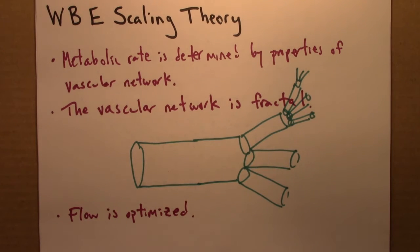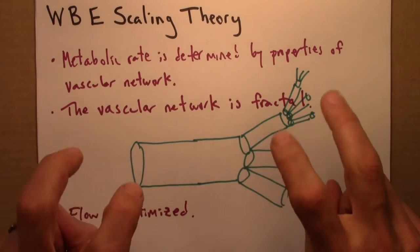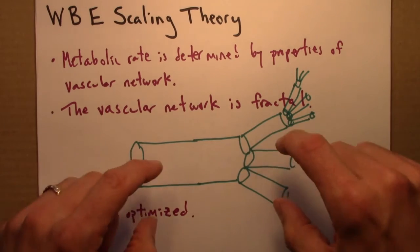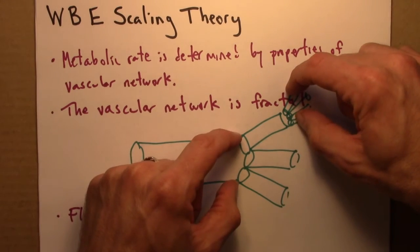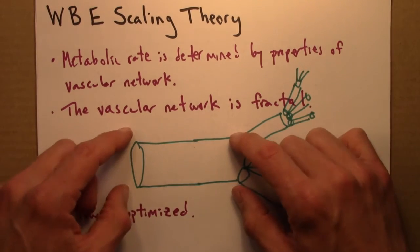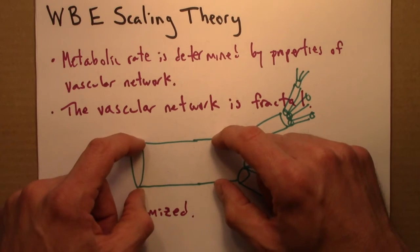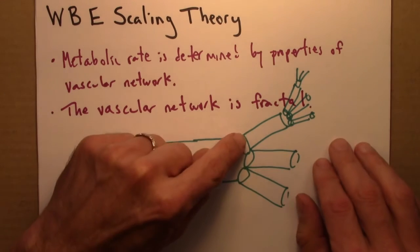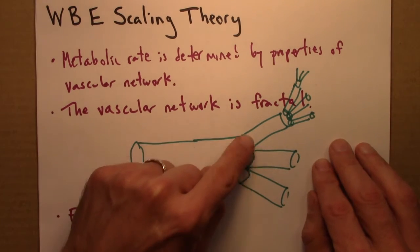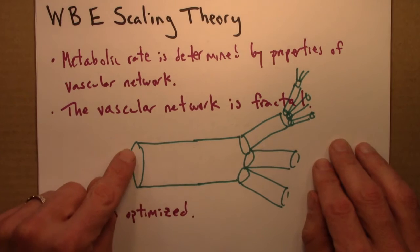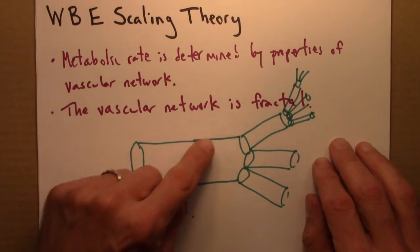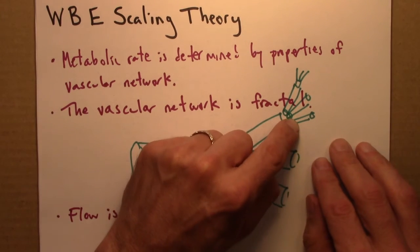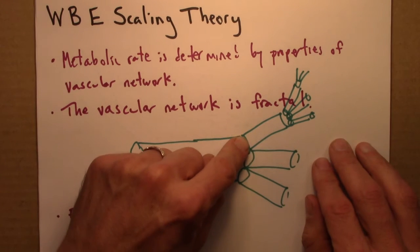the cross-sectional area at each level has to be the same. So here, there's a certain amount of fluid flowing through, determined by this area. And so, the area of these three pipes, these three vessels, has to add up to be equal to this area. And the area of these three vessels has to add up to be equal to that area.